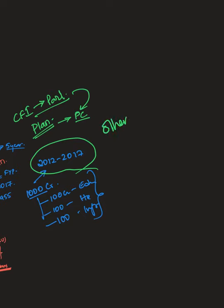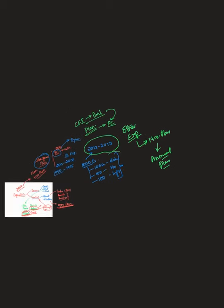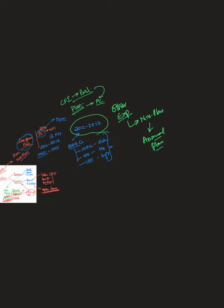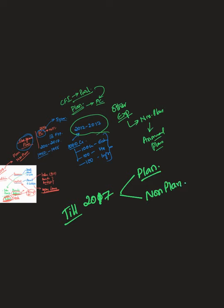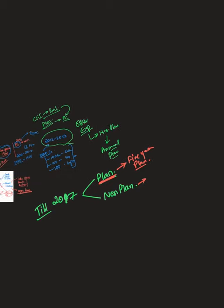All other expenditures were put under non-planned expenditure, which were decided by annual plans or by the government. To summarize: until 2017, expenditures were classified into planned expenditure — all expenditures spent in the name of the five-year plan — and non-planned expenditure, which covered everything else.